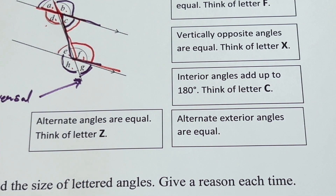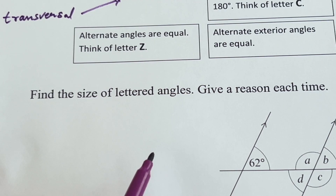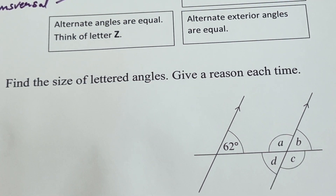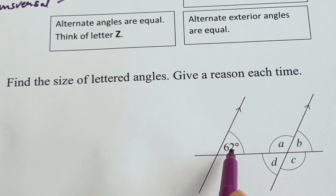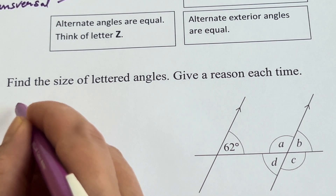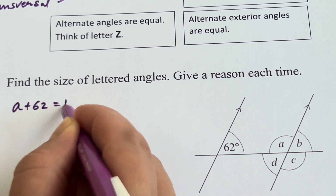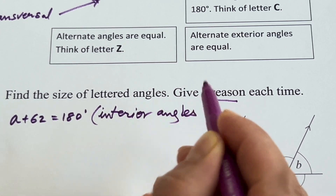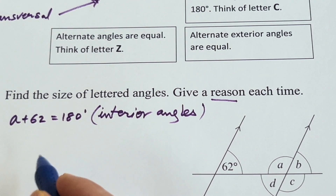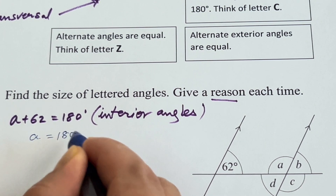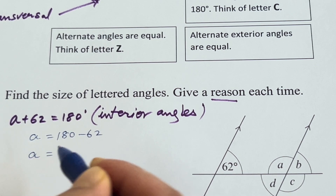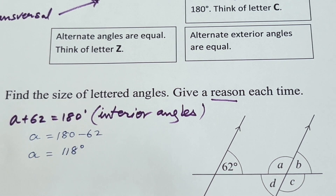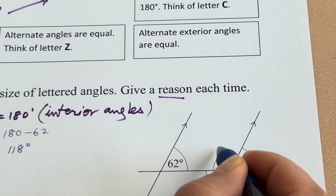Now find the size of the lettered angles, giving a reason each time. Angle A and 62 degrees are interior angles, so A plus 62 equals 180 degrees. Subtracting 62 from both sides: A equals 180 minus 62, which is 118 degrees.